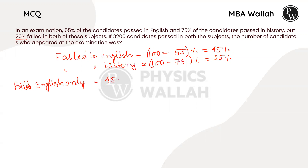Failed in history only is equal to 25% minus 20%, which is equal to 5%.